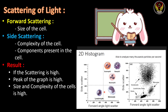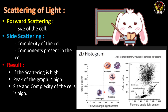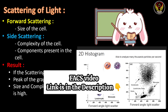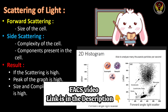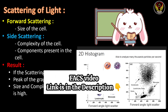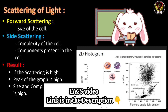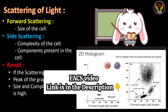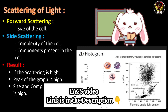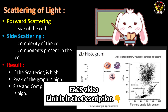For protein expression studies, there is a special technique called fluorescence-activated cell sorting, or FACS, which is discussed in detail in another video — the link is provided in the description. Covering FACS allows a complete understanding of flow cytometry.